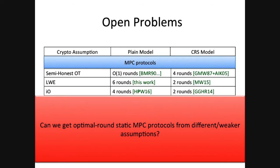For general multi-party computation, I have a table ranging from the minimal assumption of honest OT to the stronger assumption of IO. For MPC, the best we can give is six rounds: we use our four-round coin-flipping protocol and invoke the two-round protocol of Mukherjee and Wichs, giving six rounds total. The open question is whether we can achieve optimal round complexity for MPC under weaker assumptions. In the CRS model, the bound is two rounds, but even there, based on minimal assumptions, we only get four rounds.